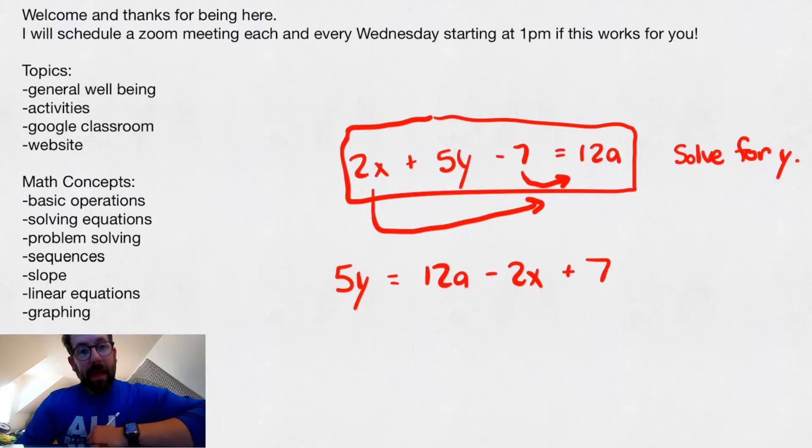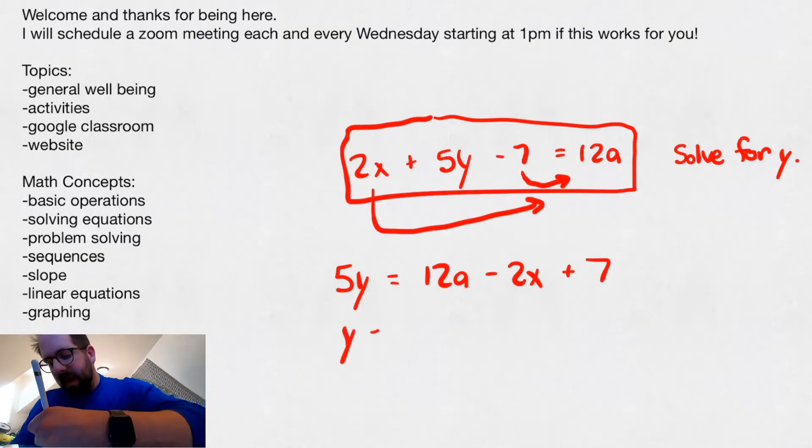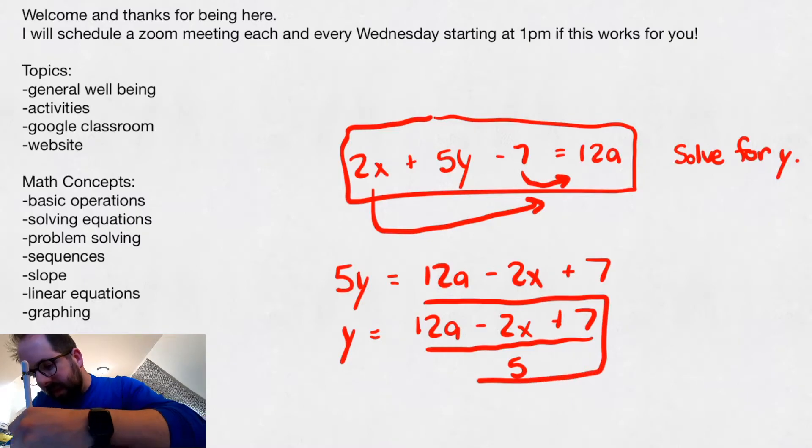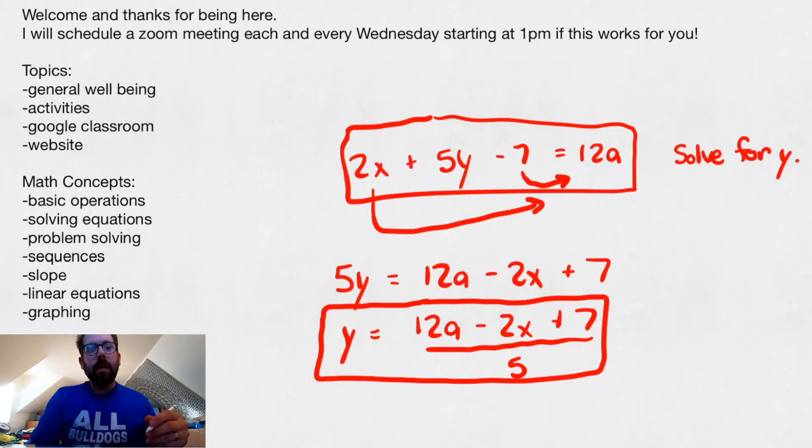So in my case, I have a 5 attached to the y, you want to divide that over. So 12a minus 2x plus 7, and I'm going to divide everything by 5, and this is what I'm looking for. This is what y is equal to. We solved for y.